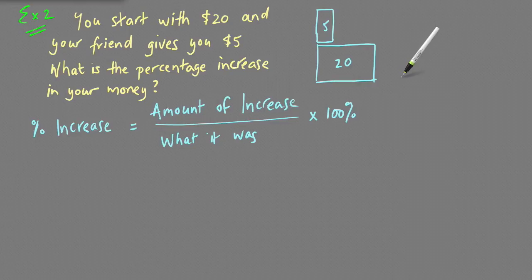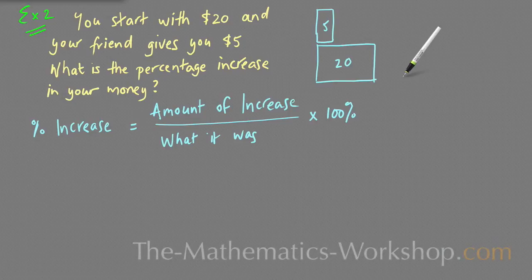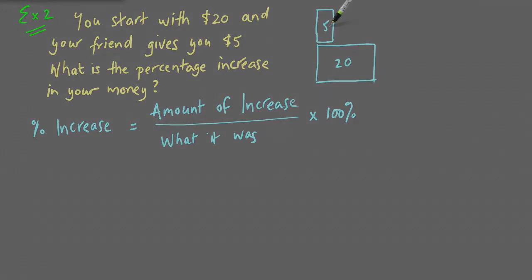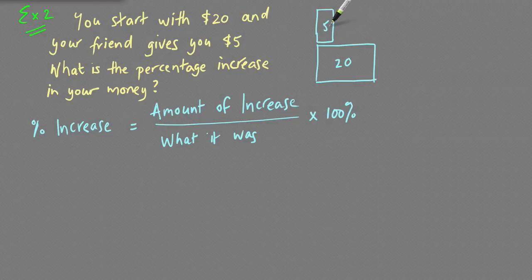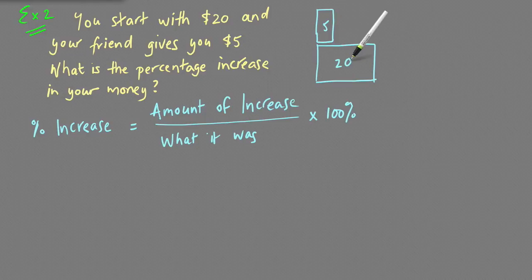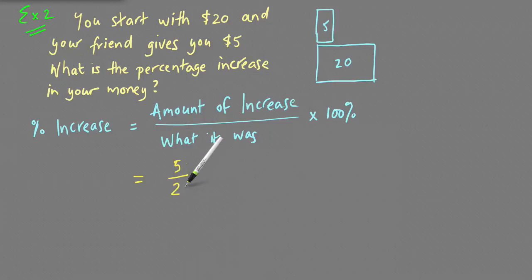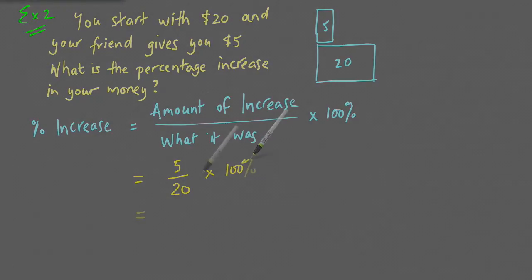The second type of percentage increase problem is where an amount increases and you work out what percentage that increase is of the original amount. For example, you start with $20 and your friend gives you $5 — what is the percentage increase? You now have $25. What the question is really asking is: what percentage is that $5 increase of the original $20? It's like asking what fraction is $5 of $20.